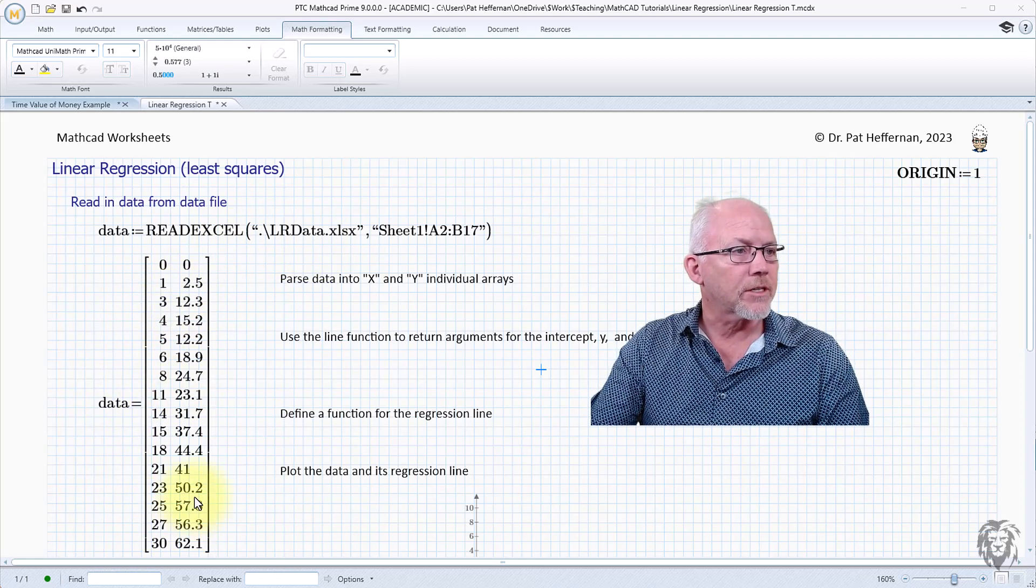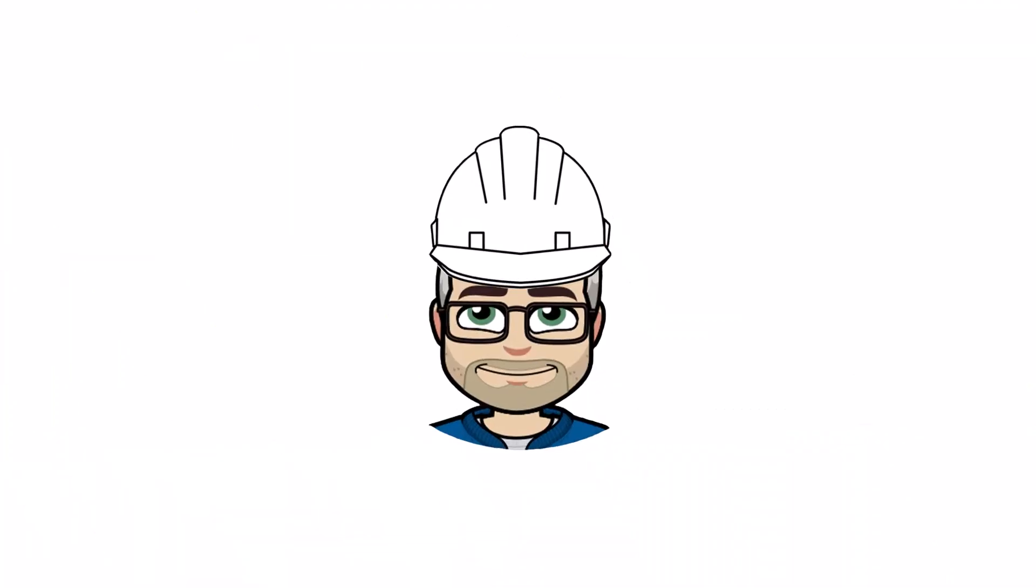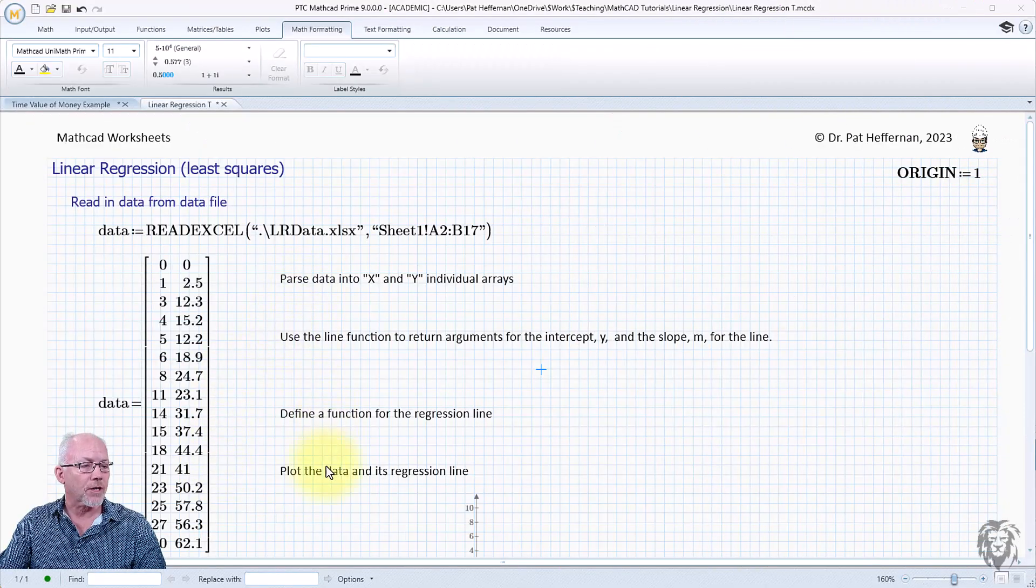So this is the array of the data that comes in—just a series of x, y points. Now let's get into dealing with this. I've already got a structure laid out, so we're basically going to step through that structure.